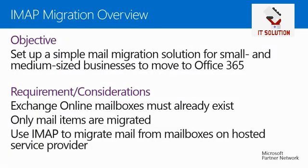This is the IMAP migration overview. The objective of the IMAP migration is to provide a simple mail migration solution for small and medium-sized businesses to move over to Office 365. The Exchange Online mailboxes must already exist. You can create your users in Office 365 or synchronize them from your on-premises Active Directory. Both identity scenarios work — bottom line is the mailboxes already need to exist in Office 365.